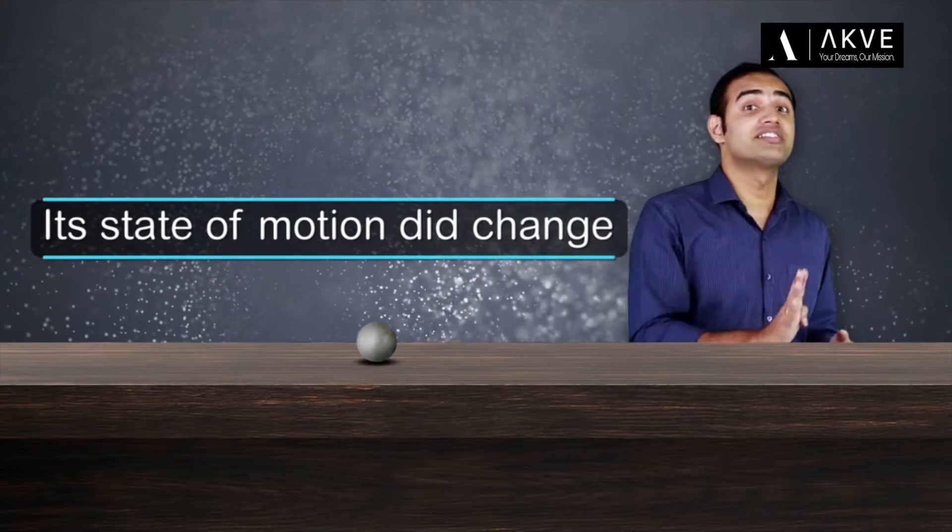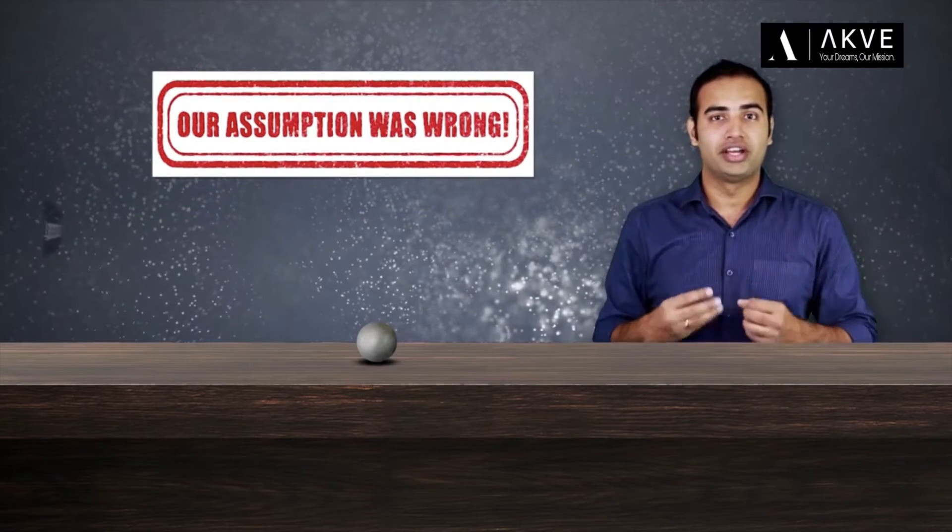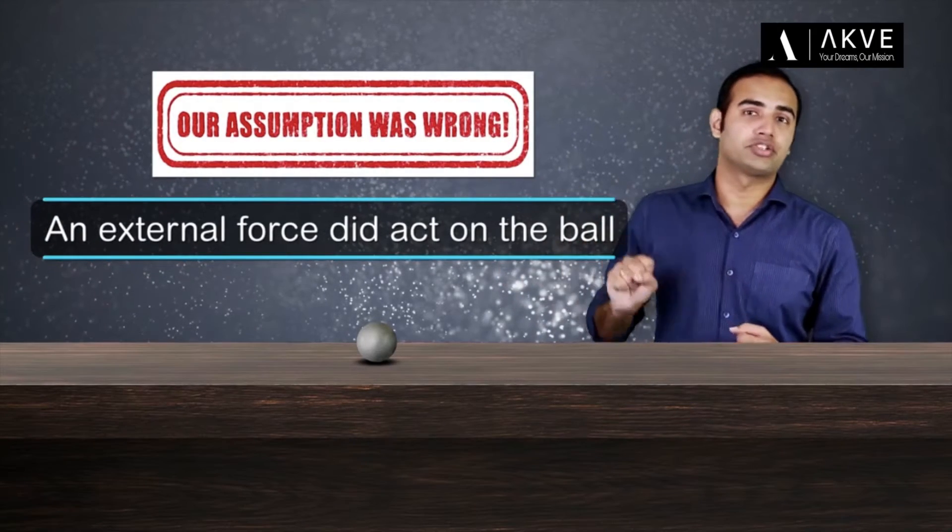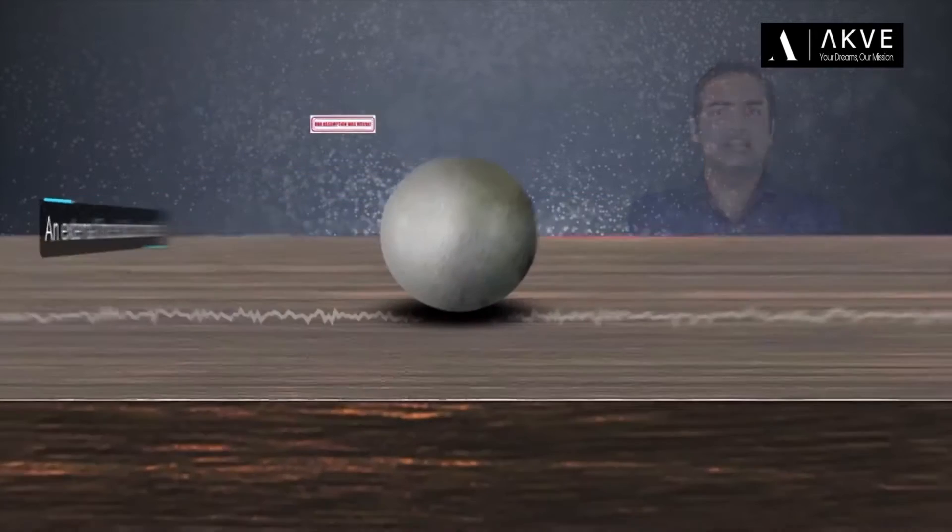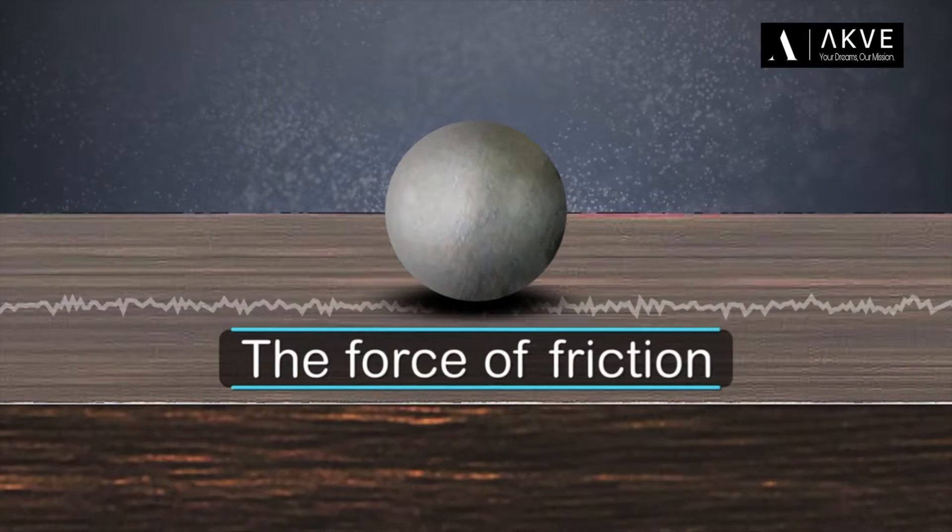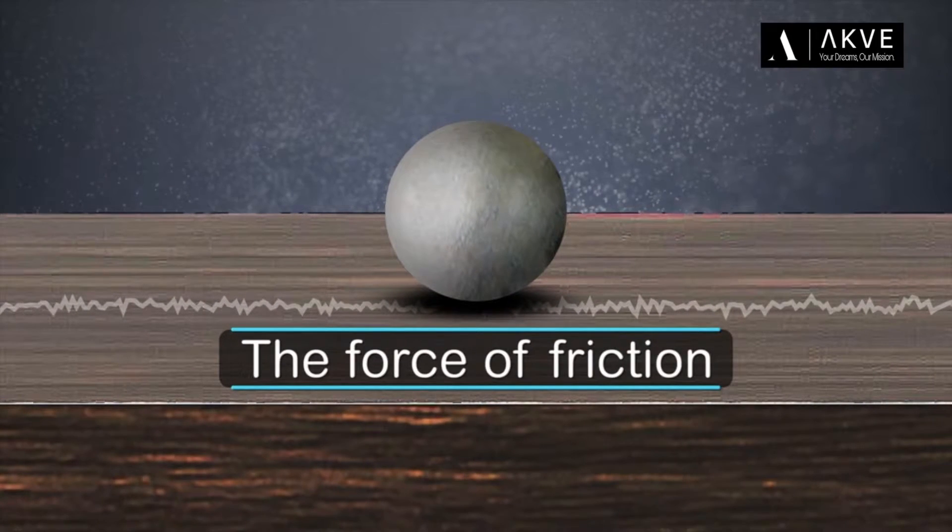No unbalanced force indicates that the ball should not have changed its state of motion. But we all saw that the moving ball came to rest, which means its state of motion did change. The only explanation is that our assumption was wrong and an external force did act on the ball. That external force was nothing but the force of friction exerted by the table's surface.